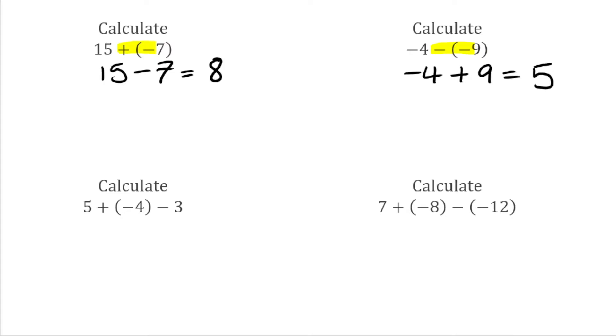Moving on, we have 5 plus negative 4, then take away 3. Again, we've got that double sign - a positive followed by a negative. Because the signs are different, I can replace that with a single negative. So this would be 5 take away 4, then take away 3. Five take away 4 gives us 1, take away another 3 leaves us with negative 2.